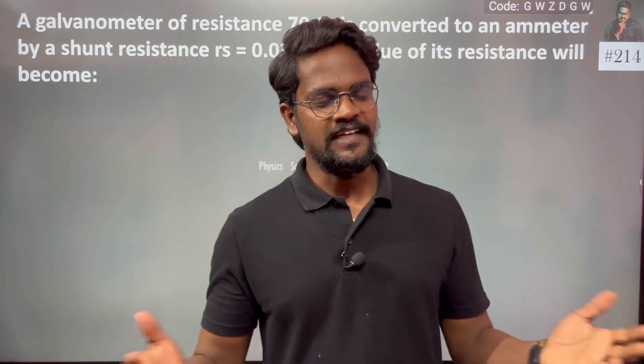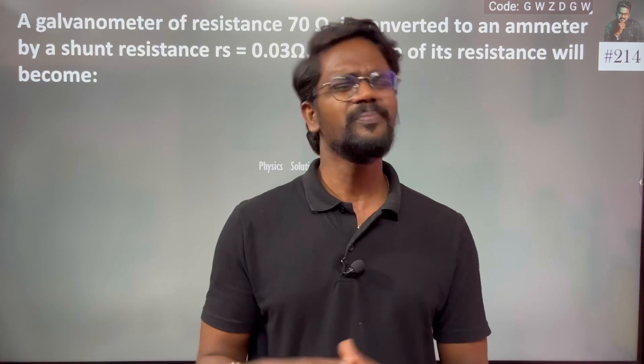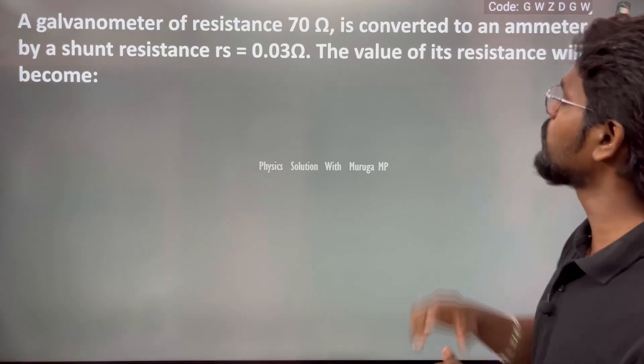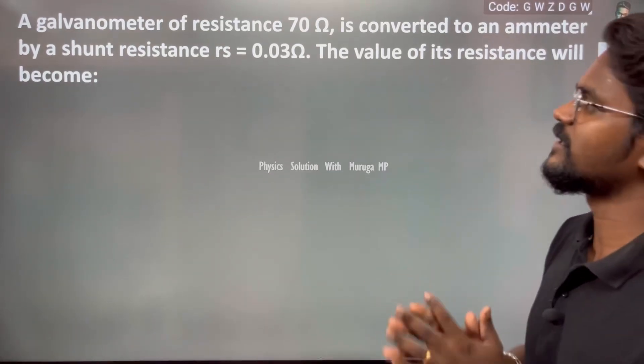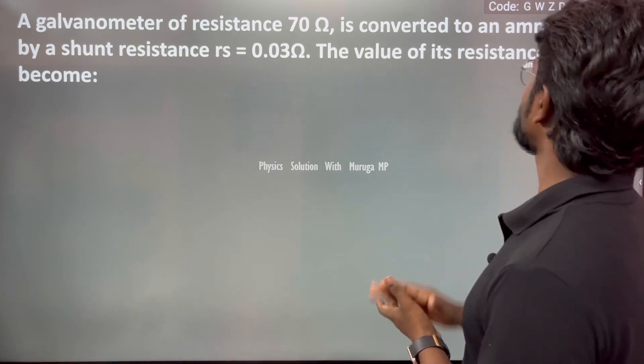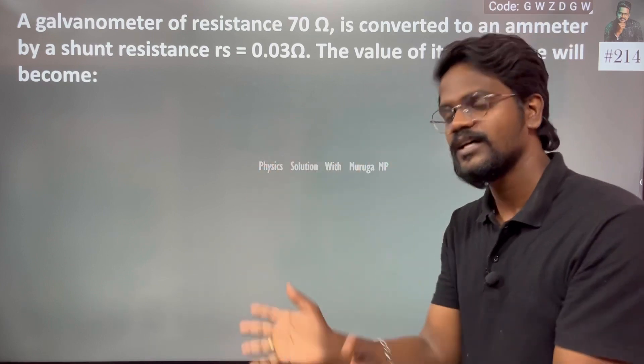Hi everyone, here's an interesting basic question. A galvanometer of resistance 70 ohm is connected to an ammeter by a shunt resistance rs = 0.03Ω. What will be the value of its resistance? What will be the value of the resistance in that total circuit?